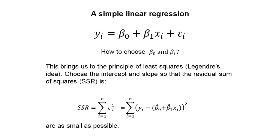What if we add a value for beta 0? We might be interested in how to choose beta 0 and beta 1. Here, yi equals beta 0 plus beta 1 times xi plus some random variable epsilon sub i. This brings us to the principles of least squares, Legendre's idea. We want to choose the intercept and slope so that the residual sums of squares, SSR, is as small as possible.